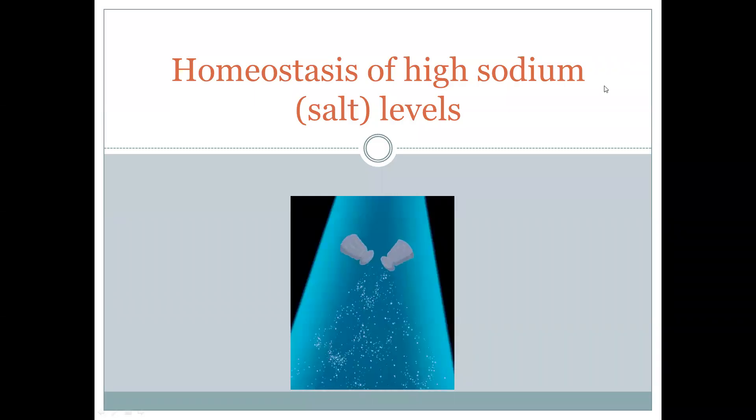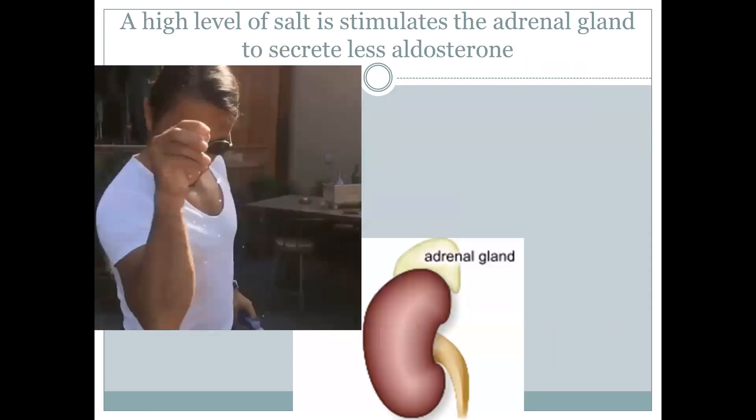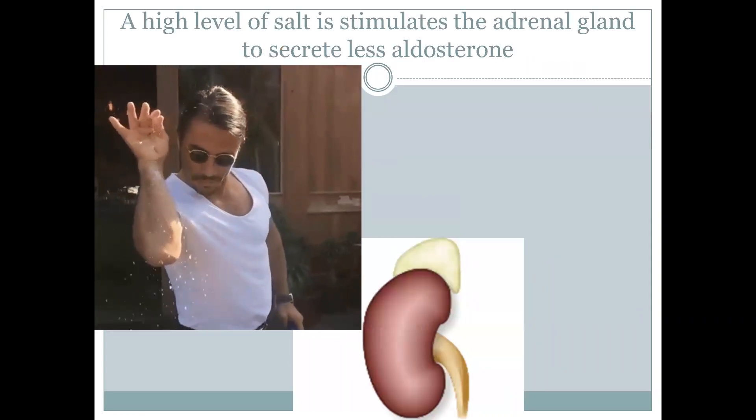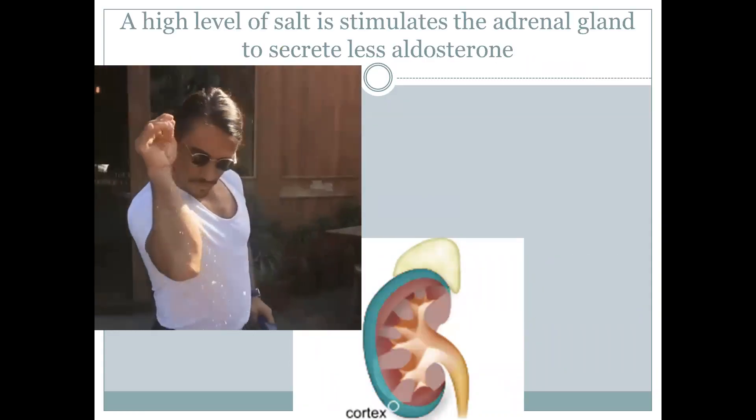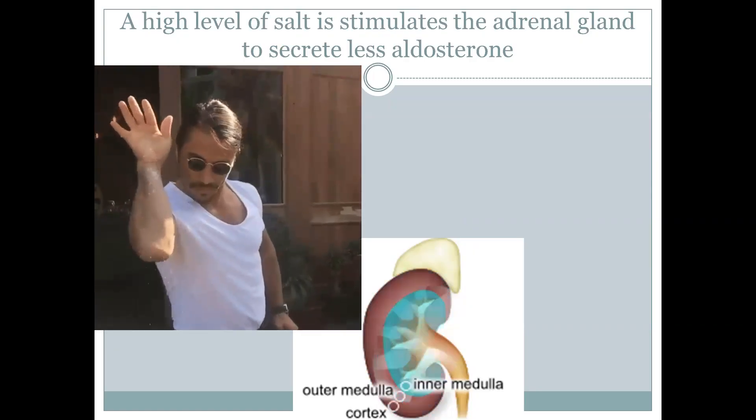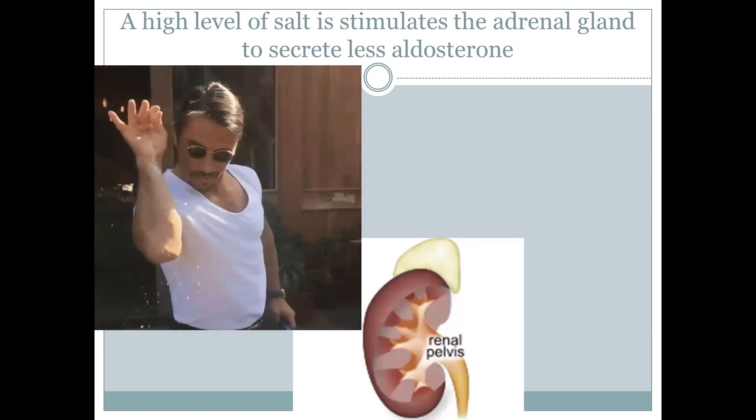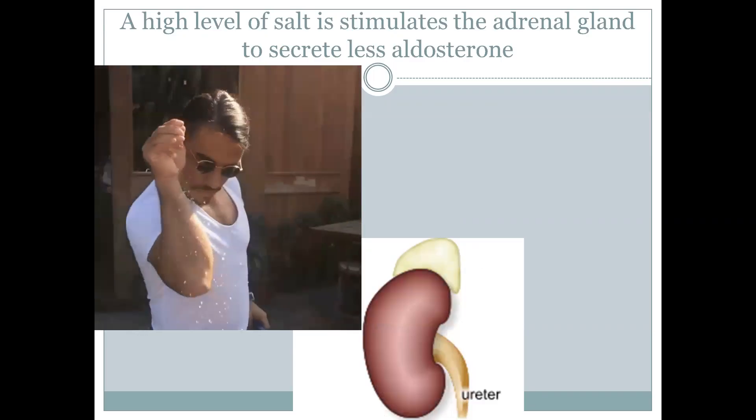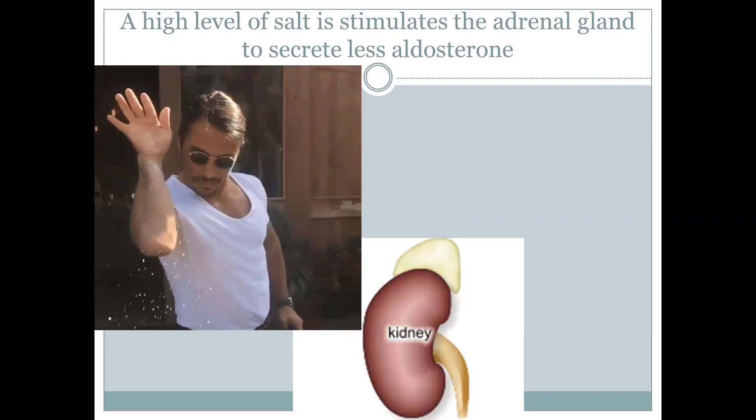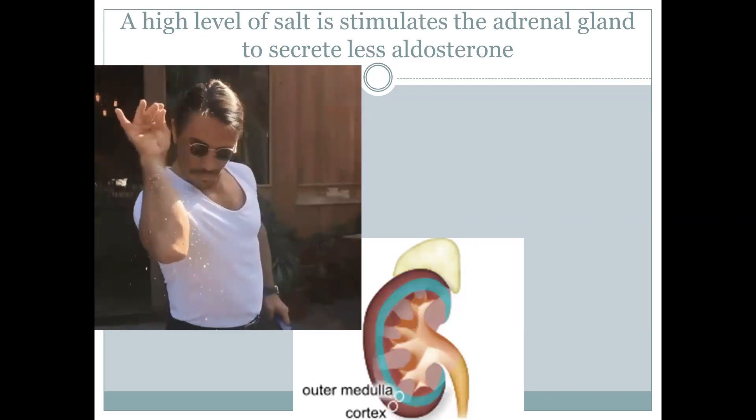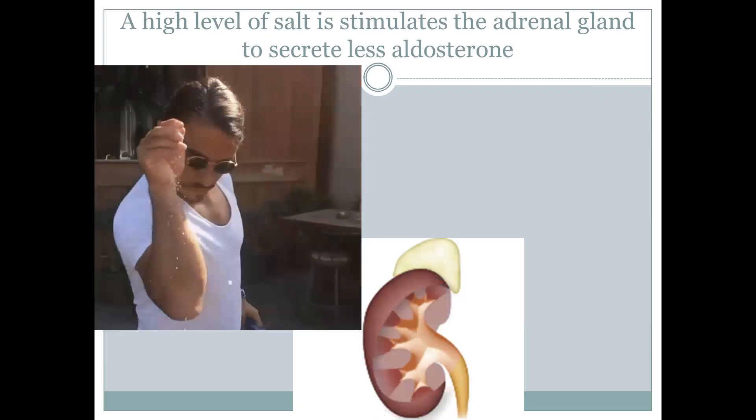The regulation of salt levels within the blood when they increase above the normal limit. When there's a higher amount of salt within the blood, receptor cells within the kidney pick this up and they will cause the adrenal gland to inhibit its secretion, basically secrete less aldosterone or no aldosterone which will go to the kidney.